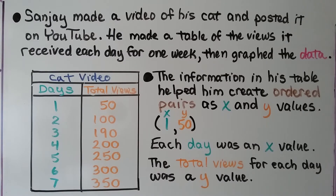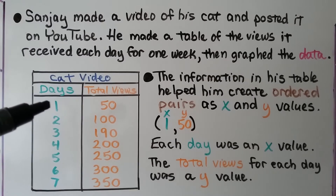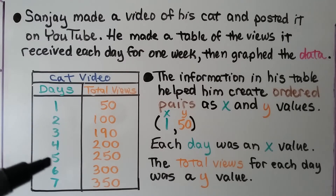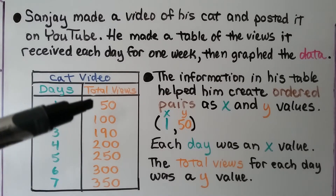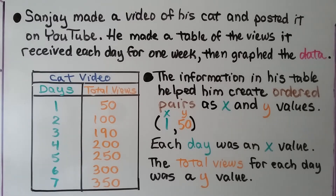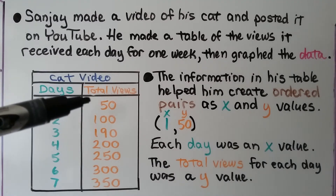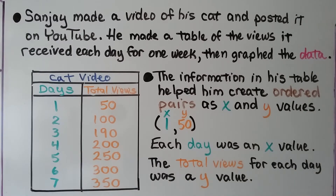Sanjay made a video of his cat and posted it on YouTube. He made a table of the views it received each day for one week — days one through seven — then graphed the data. The information in his table helped him create ordered pairs as x and y values. For the first day, we have a one for x and 50 for y. Each day was an x value and the total views for each day was a y value.